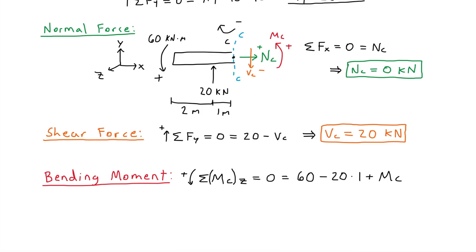So that completes our moment equation. We can now solve for MC, which ends up being negative 40 kilonewton meters. So that is our resultant bending moment.